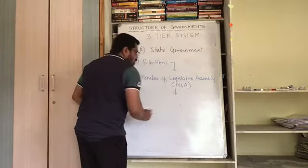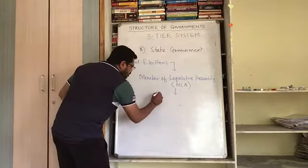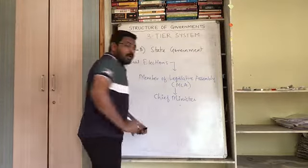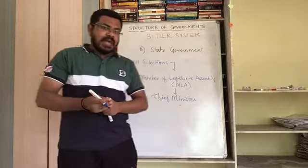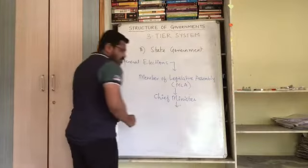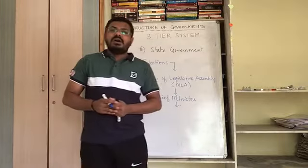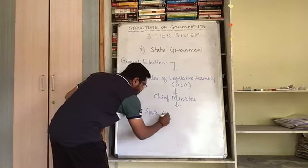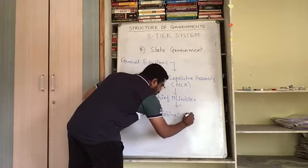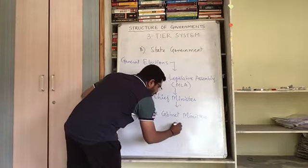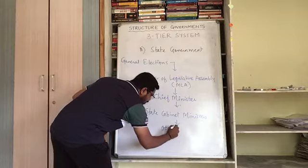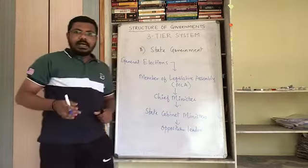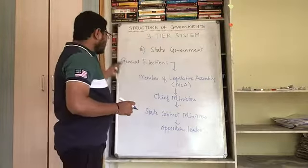Out of the elected MLAs, one will become the chief minister. The state government also forms a cabinet ministry, known as the state cabinet ministers. They will also have opposition leaders and opposition MLAs. This is how the state governments are formed.